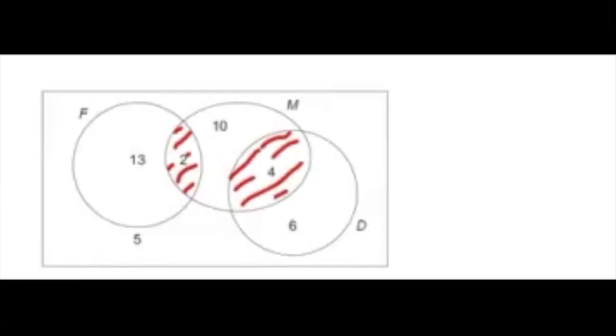Let's look at part B, question 1. One of these students is chosen at random. Find the probability that this student studies exactly two of these subjects. The red shaded region represents the number of students who study two subjects. The 13, the 10, and the 6 represent the students that study one subject only.